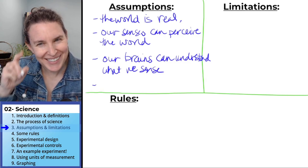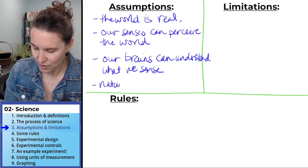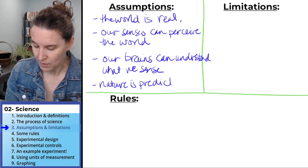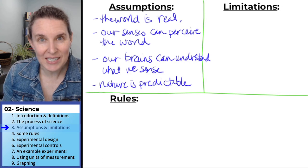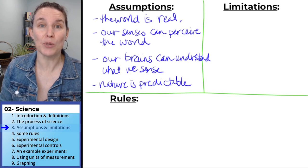And the last assumption, and this is super interesting, is that nature is predictable. So we can predict what is going to happen and that works. Nature can be predicted.